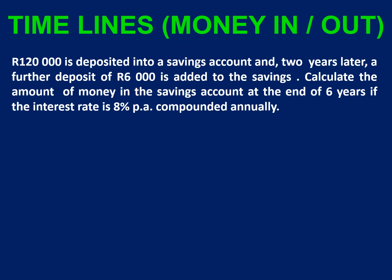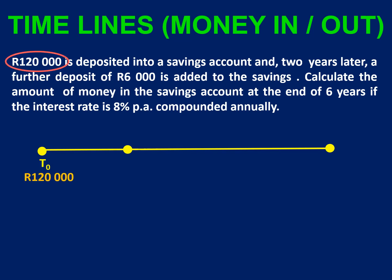Looking at a timeline just helps clarify the exact amount of time a specific investment is in the bank. So 120,000 Rand goes in immediately at the beginning — no time has passed — and that's why we write T0. Then two years later, at T2, 6,000 Rand goes into the account. And we want to know how much is going to be there at the end of six years, so at T6.